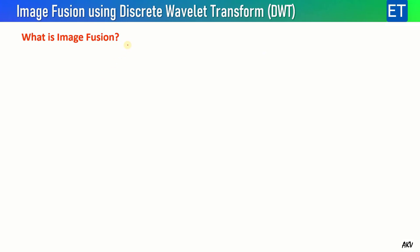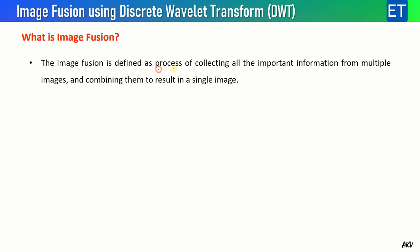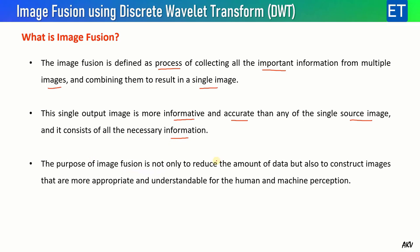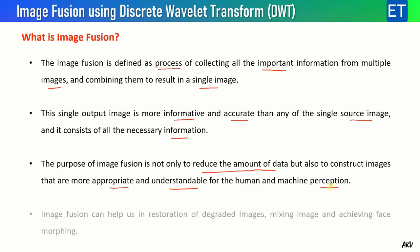Image fusion is defined as a process of collecting all the important information from multiple images and combining them to result in a single one. The single output image is more informative and accurate than any of the single source images, and it consists of all the necessary information. The purpose of image fusion is not only to reduce the amount of data but also to construct images that are more appropriate and understandable for human and machine perception. With image fusion we can restore degraded images, mix many images to create a single one, and also achieve face morphing.